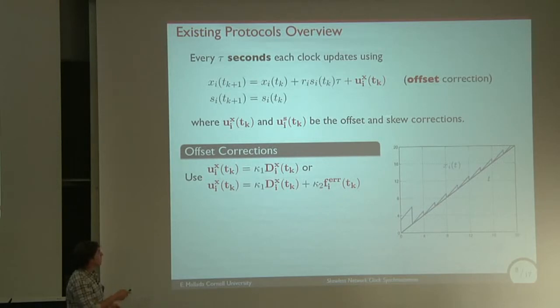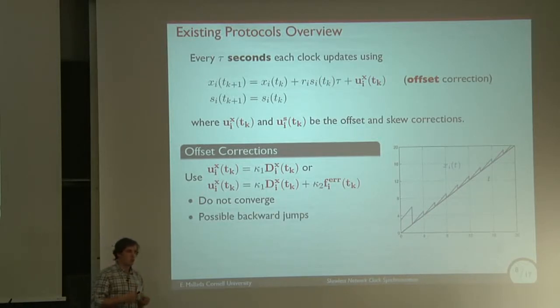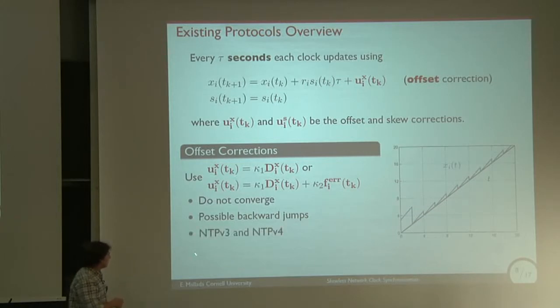Different protocols have different options. There are some protocols that use only offset corrections. You can use offset corrections based only on your offset values that you measure, or also using the frequency errors. The problem is that they do not converge. If you don't change the frequency of your local clock, you periodically have to correct back again to compensate this skew. You can also have backward jumps, which means that you might have a later time that has a smaller value, which is critical in many applications. This type of solution is used in NTPV3 and NTPV4.